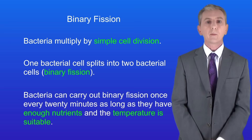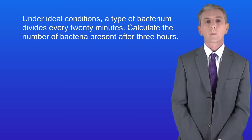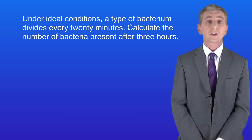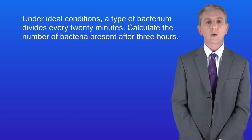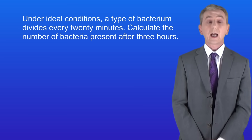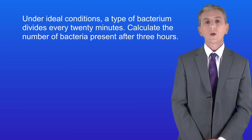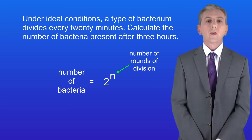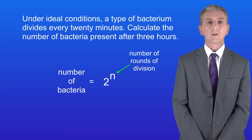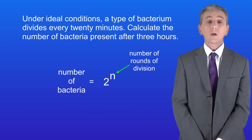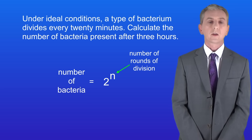In the exam, you could be asked to calculate the number of bacteria after a given time. Here's a sample question: under ideal conditions, a type of bacterium divides every 20 minutes. Calculate the number of bacteria present after three hours. To calculate the number of bacteria, we use this equation: the number of bacteria equals 2 to the power of n, where n is the number of rounds of division. You're not given this equation in the exam, so it's important that you learn it.